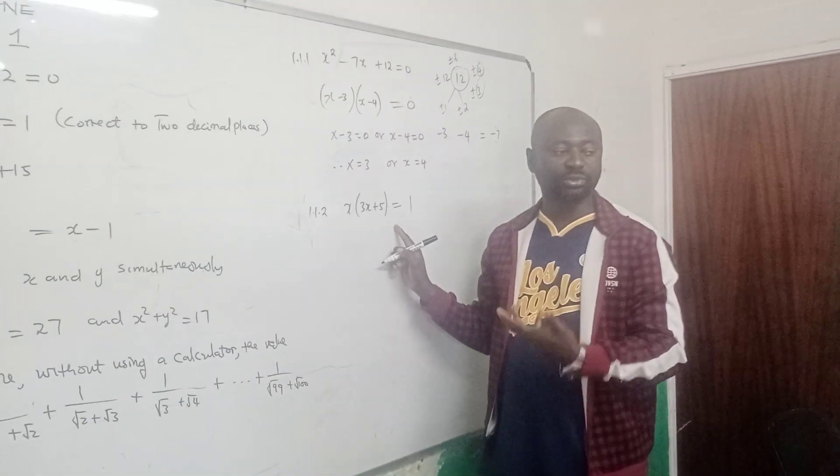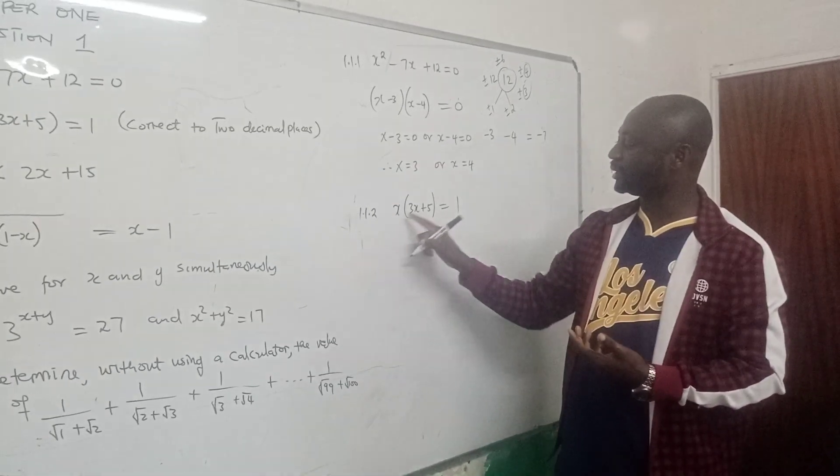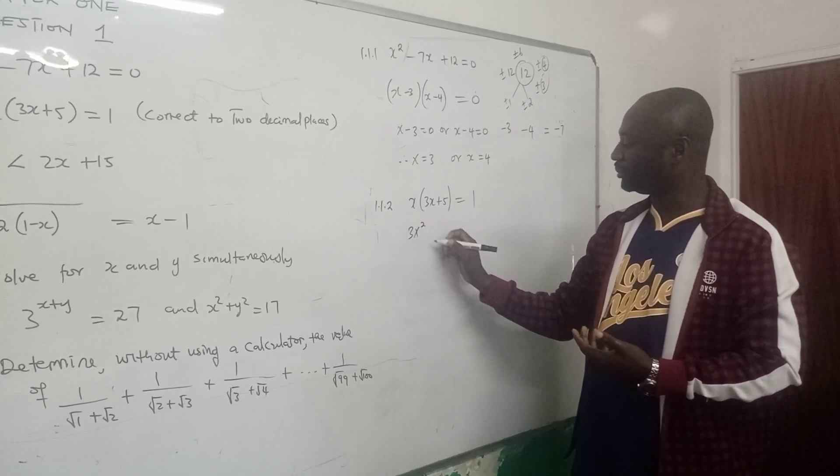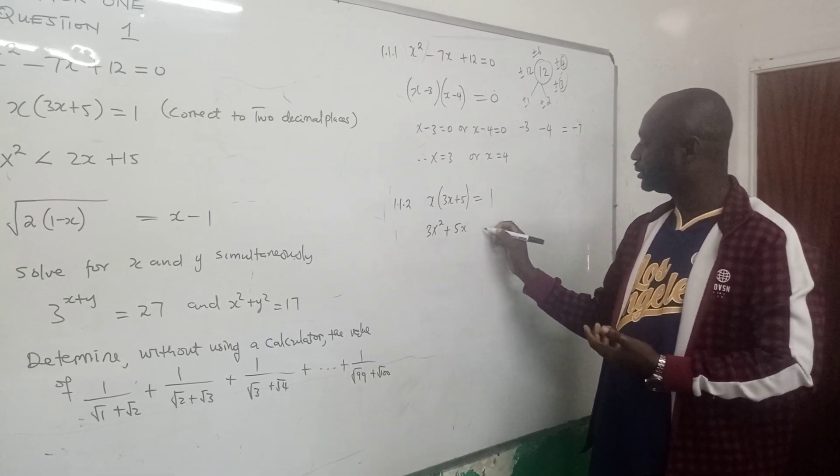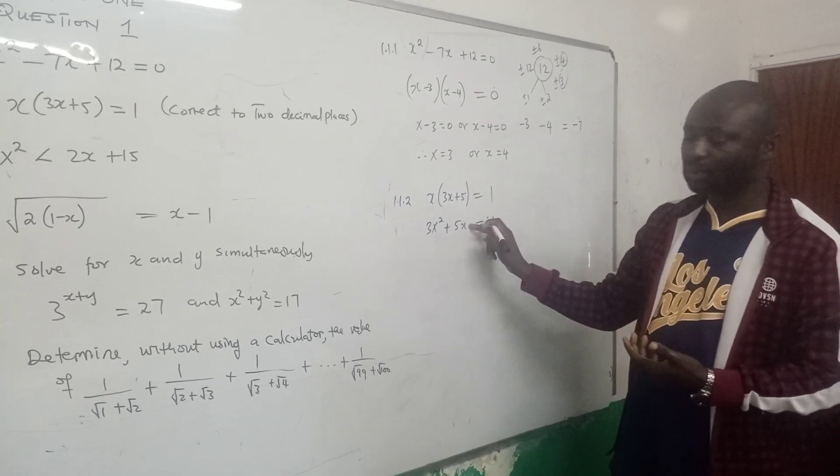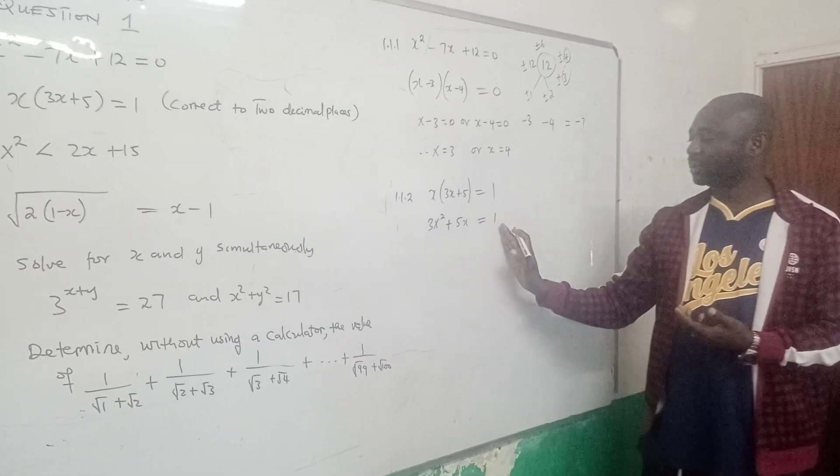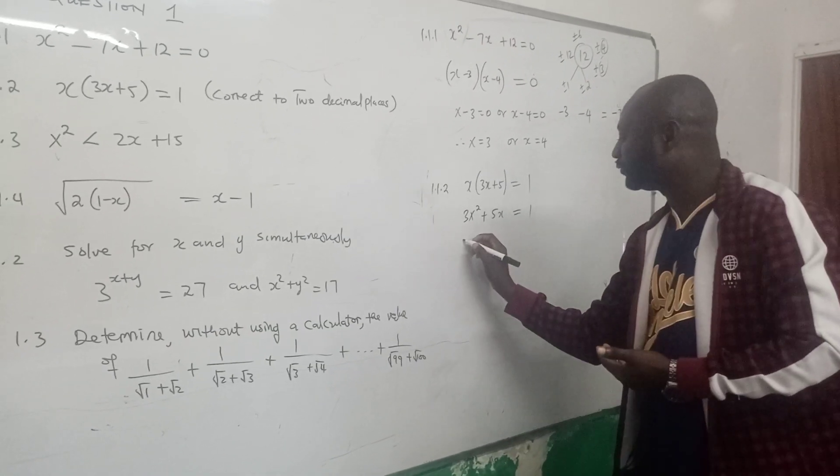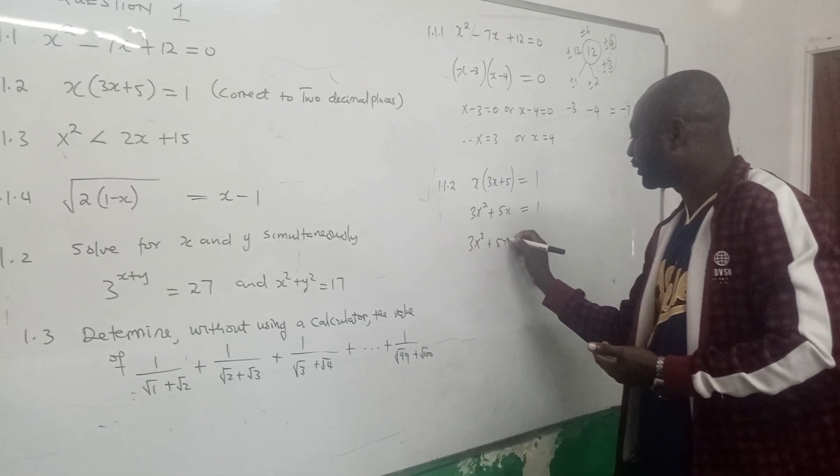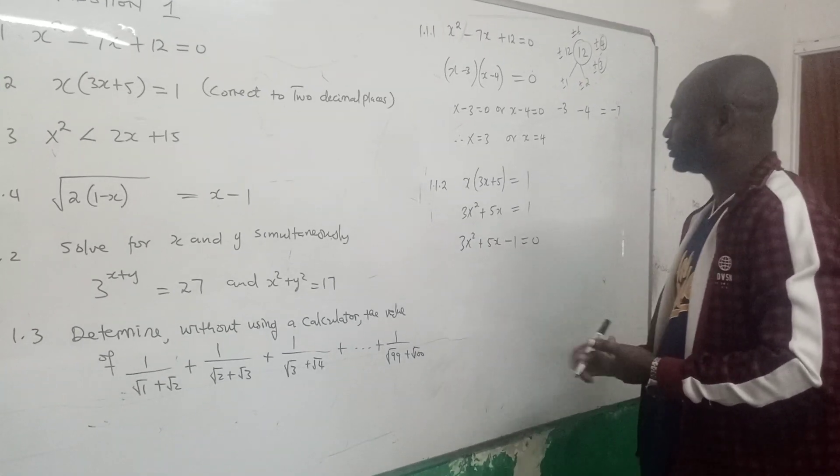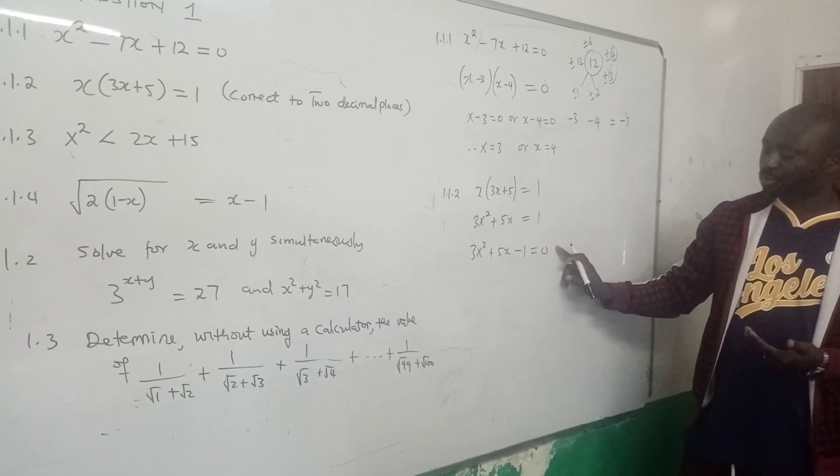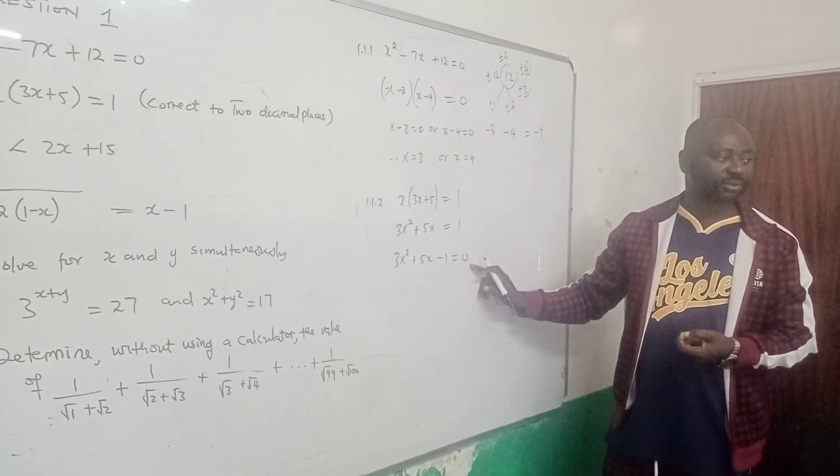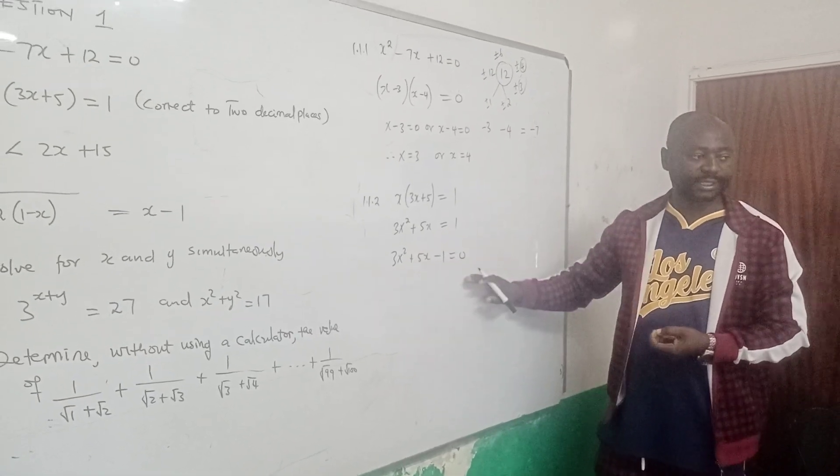First thing you do is to expand to remove the bracket. We use x to multiply 3x and that will give you 3x squared. x multiplied by 5 will give us 5x equals to 1. Then we transpose the 1 to the left. You need to minus 1 from both sides. So what will happen will give us 3x squared plus 5x minus 1 equals to 0. This is what we call a standard form. Make sure you put 0 here for one mark.